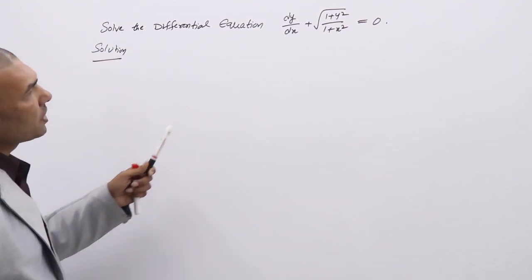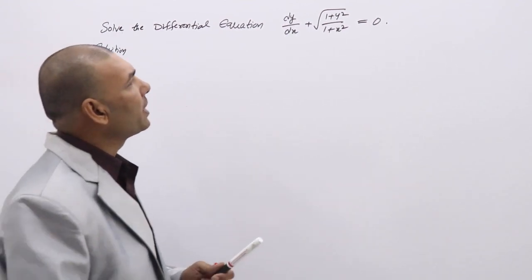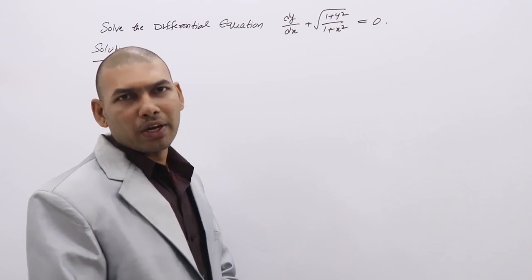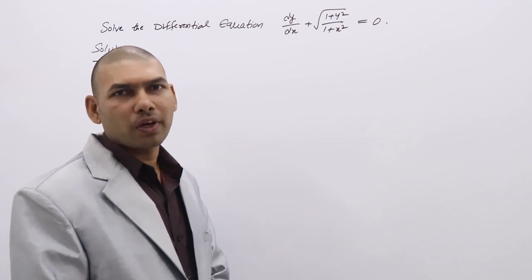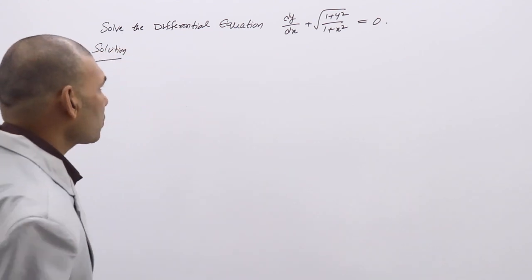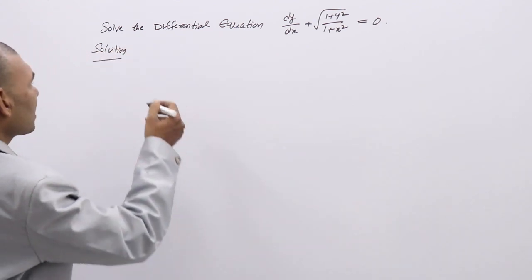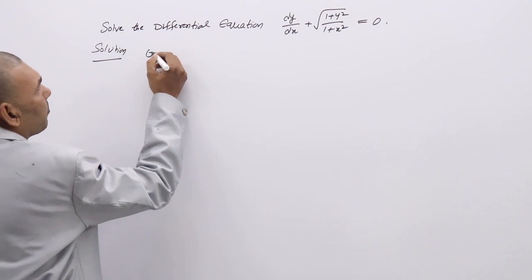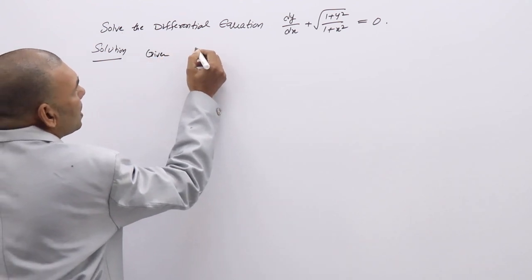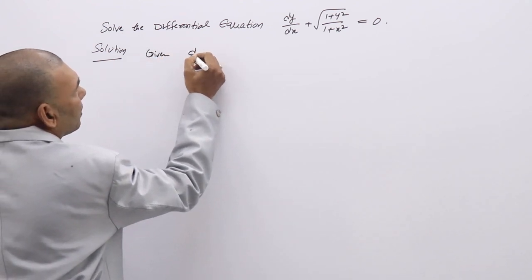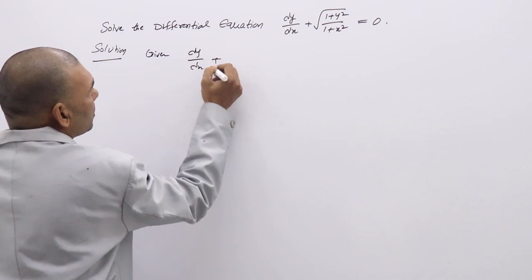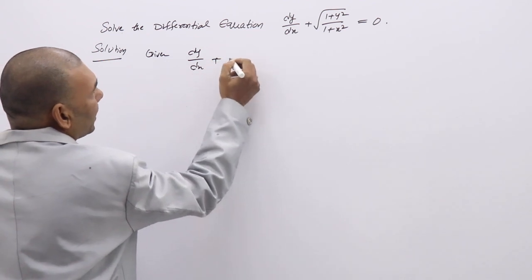Solve the differential equation dy/dx + √(1+y²)/√(1+x²) = 0. First, note down the given DE. Next, we will decide which type of DE it is.